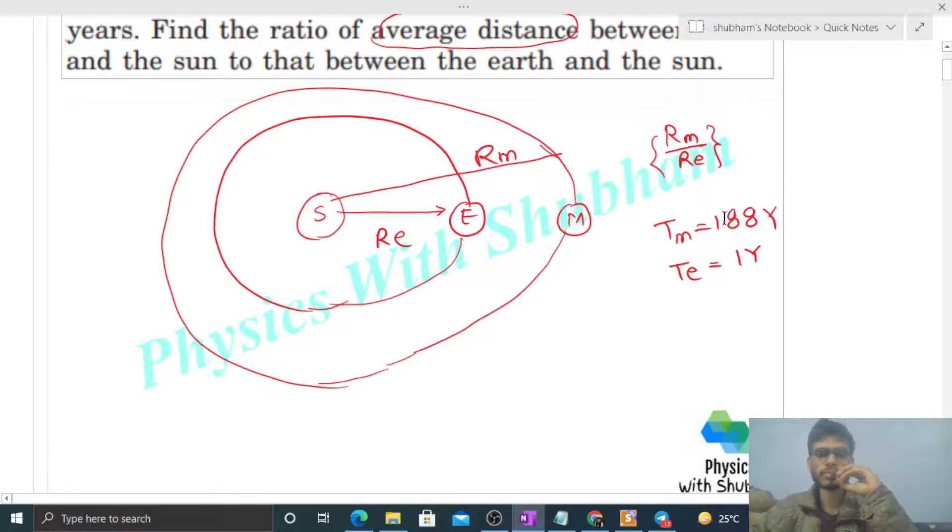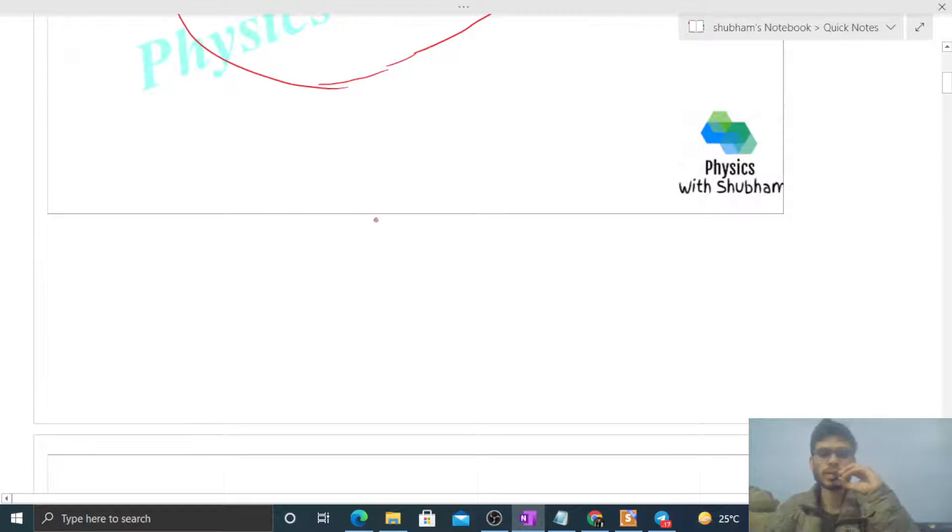So if we consider circular motion, the Sun is here and any planet if it moves in a circular path, let's say mass of the Sun is capital M and mass of this planet is small m, and the radius of orbit of the planet is r, then the gravitational force of attraction, that is G M m divided by r square.